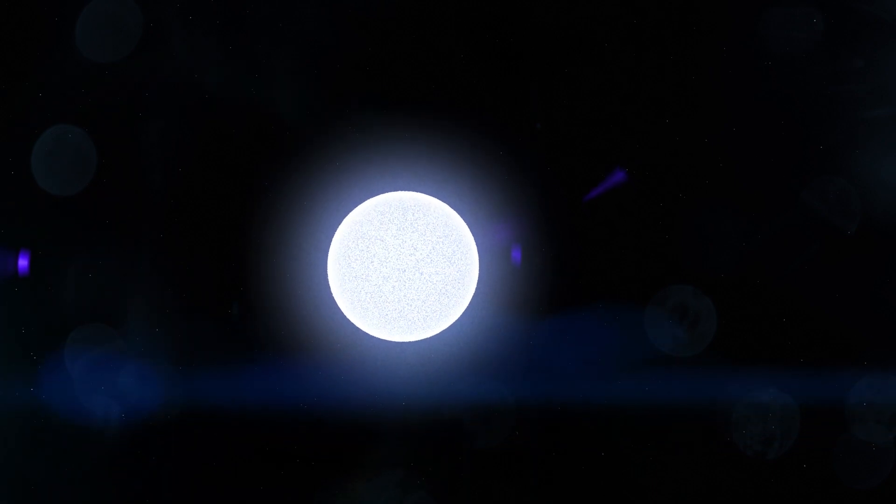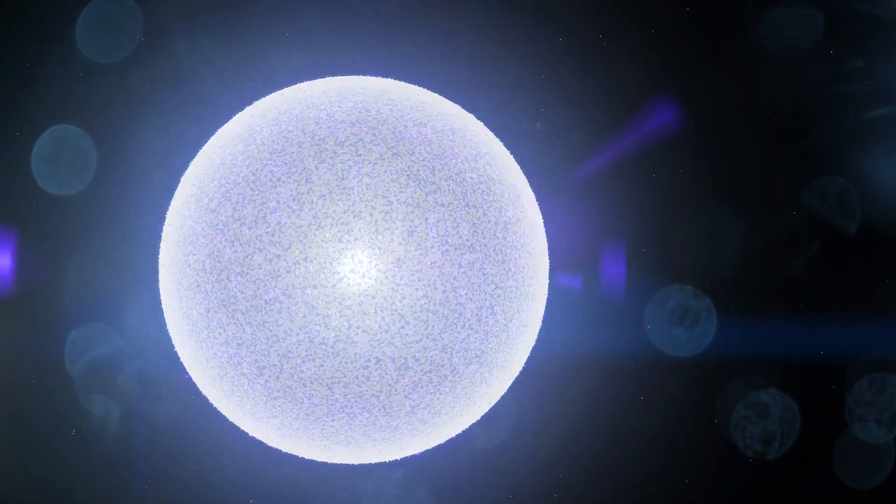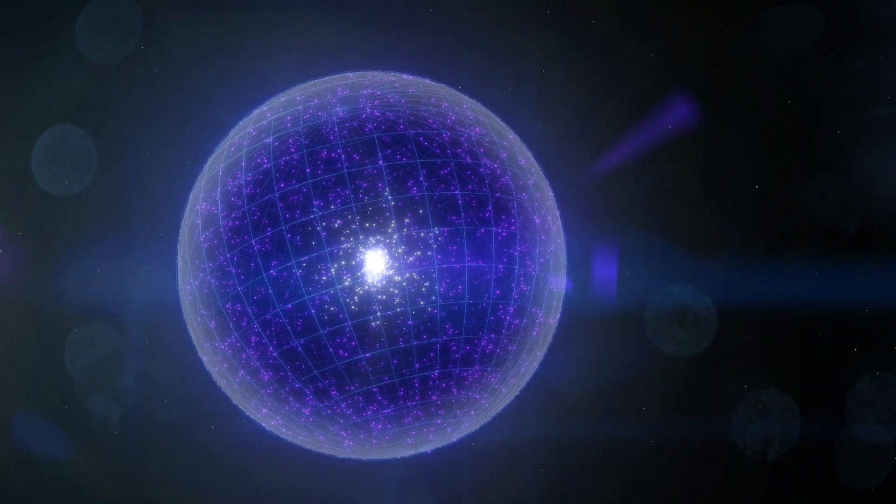As with most gamma-ray bursts, the boat arose from the death of a massive star. When its core ran out of fuel, it collapsed, creating a black hole in the star's center.